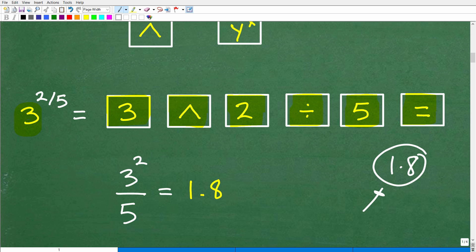If you have 1.8 as your answer, this is incorrect. 3 to the 2 fifths power is not 1.8. But you're saying, what are you talking about? You just typed it out correctly. Well, what we just typed out is not 3 to the 2 fifths power. What we just typed is 3 squared divided by 5. So let's take a look at this.